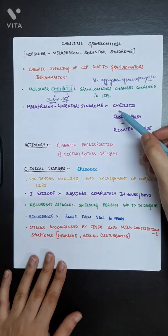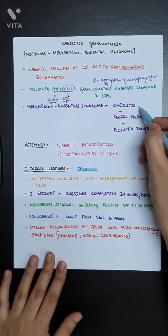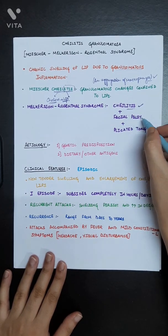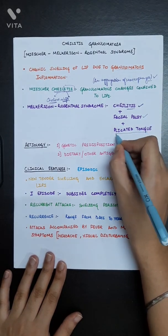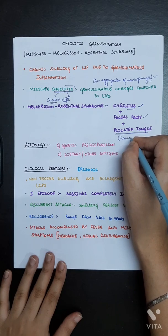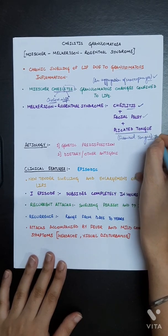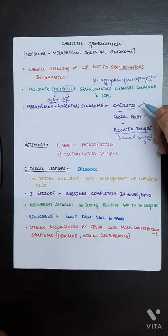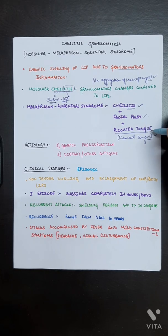Now Melcherson-Rosenthal syndrome is basically associated with cheilitis and facial palsy and plicated tongue. Plicated tongue is our fissured tongue.